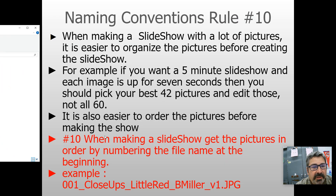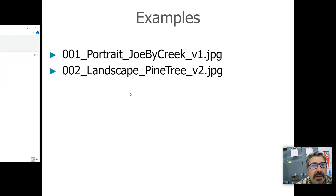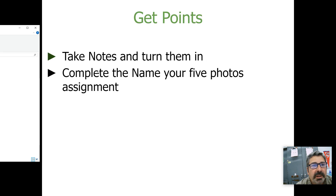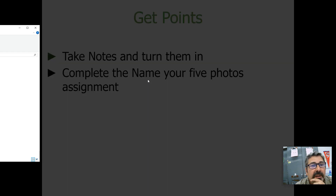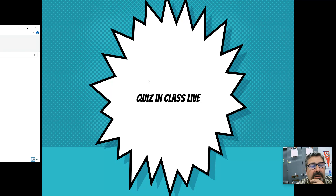Write everything down in red. Here are examples: 001, 002. To get your points, make sure you take complete notes, and then complete the assignment called 'Name Your Five Photos.' In class, I'm going to quiz you on this material.